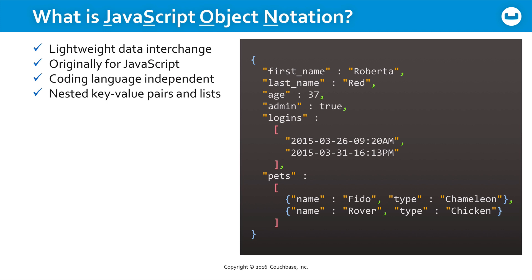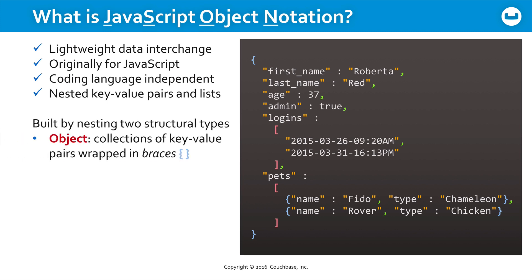JSON is nested key-value pairs and lists. There are two fundamental structures: the object, where objects are collections of key-value pairs wrapped in braces, and then there's the array, which is an ordered list of values wrapped in brackets.